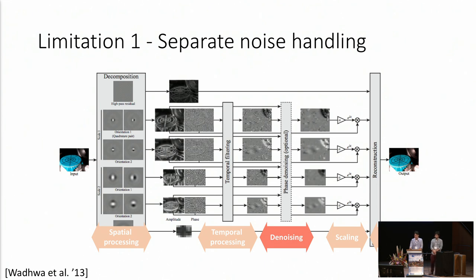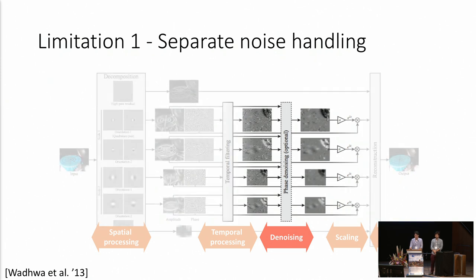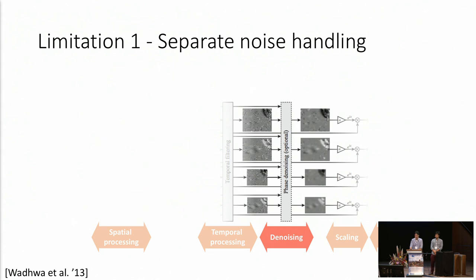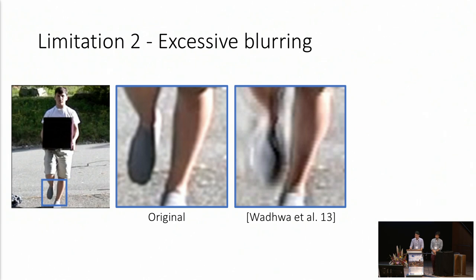Even though prior art generates good results, it requires careful hand-design of each block. For example, noise is a serious problem that can overshadow the motion of interest, so in prior art it must be handled in the post-processing step. In addition, current techniques can only handle pure translational motion without occlusion or parallax, which produces artifacts near object boundaries.